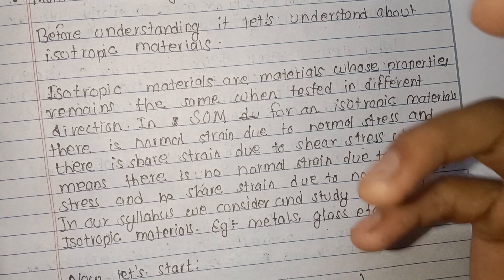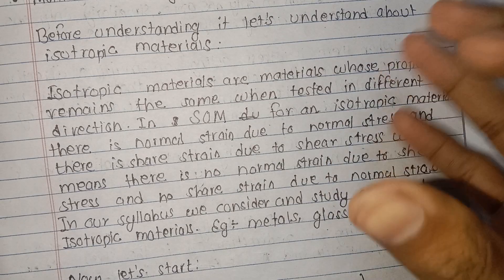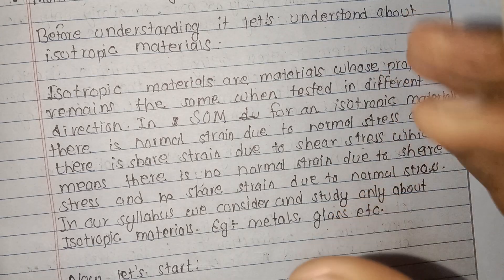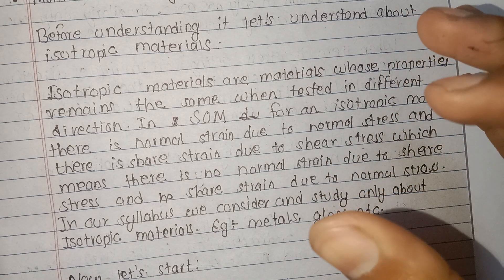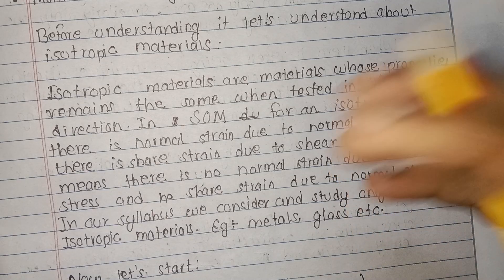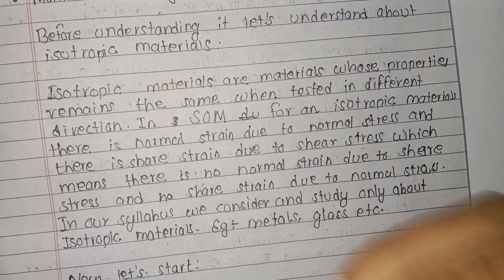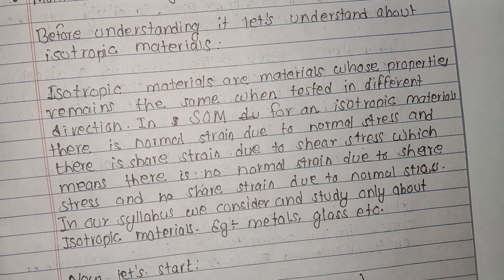For an isotropic material, the modulus of elasticity is constant. The material properties are the same — the modulus of elasticity does not change with direction.